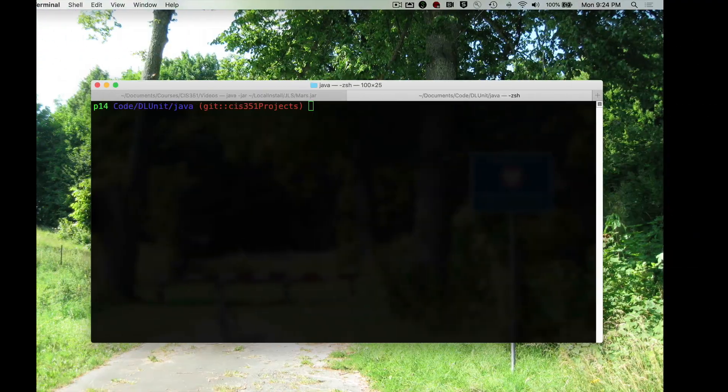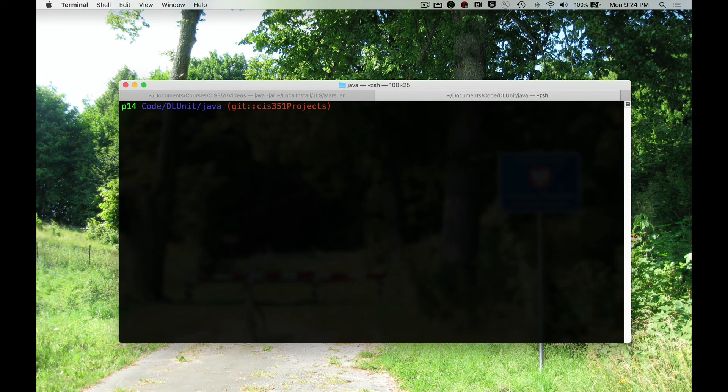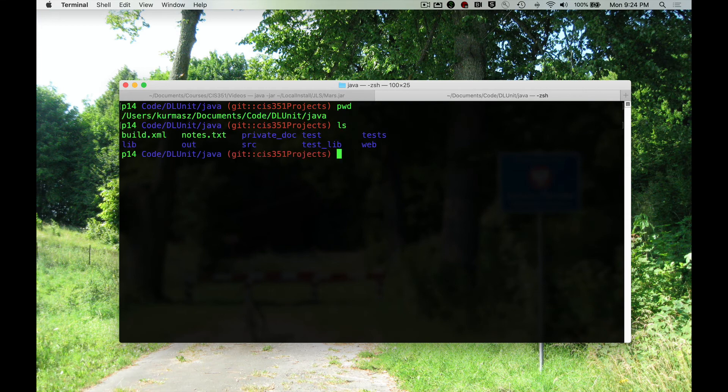So let's take some inspiration from file systems. So here I'm in the directory for one of my own coding projects. And here we can see the full path name for this project and the contents of the project. In particular, note that there's a source directory and a lib directory. And now I'm going to change into the source directory. Notice I just had to type cd source. I didn't need to give the absolute path of that directory. I didn't have to type in /user/KermisZ/document/code/DLunit/Java/SRC. I wanted to go into the SRC directory, so I just type CD SRC.